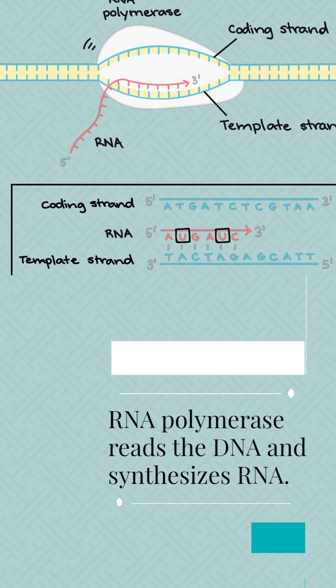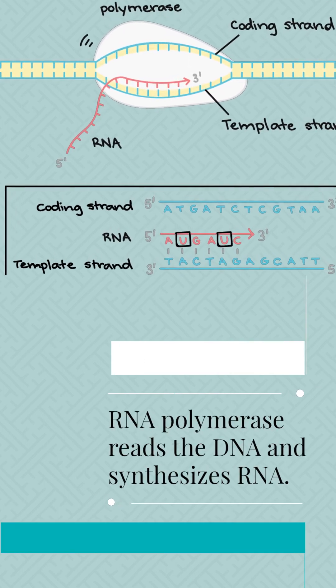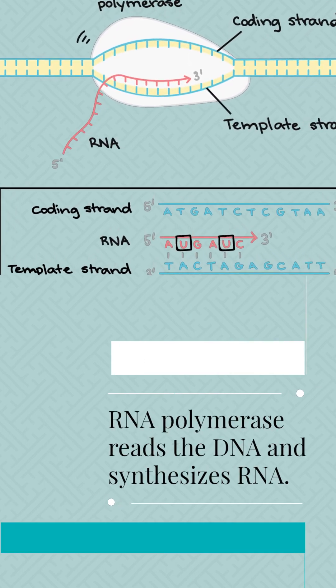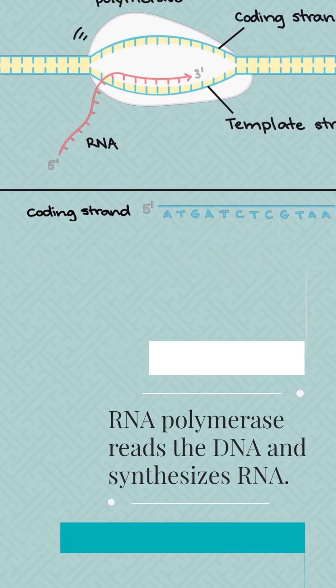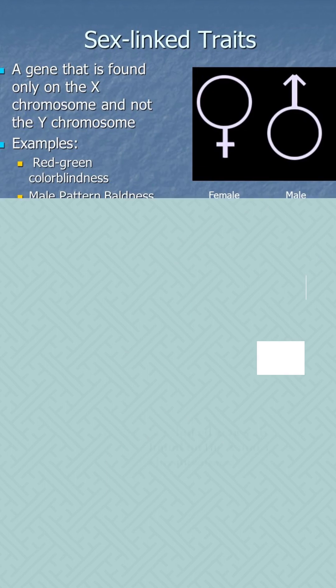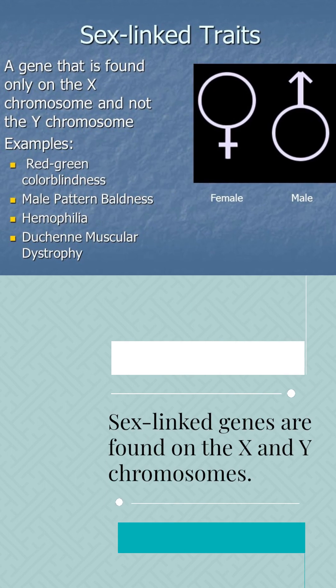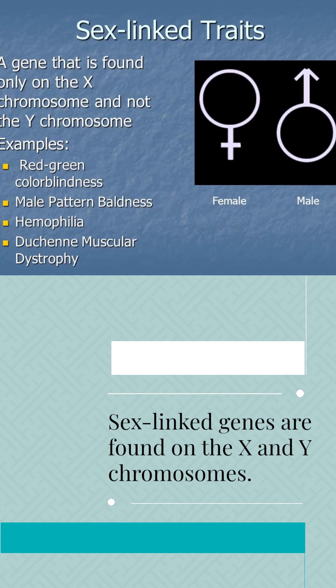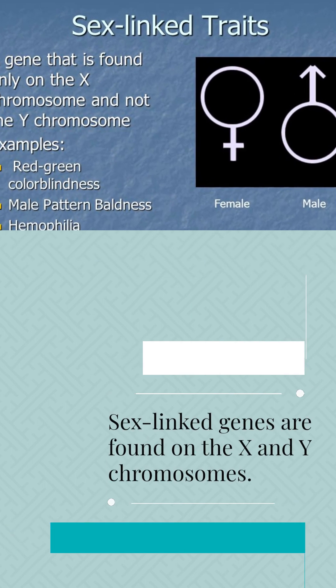RNA polymerase reads the DNA and synthesizes RNA. Sex-linked genes are found on the X and Y chromosomes.